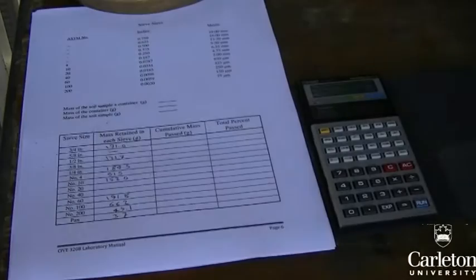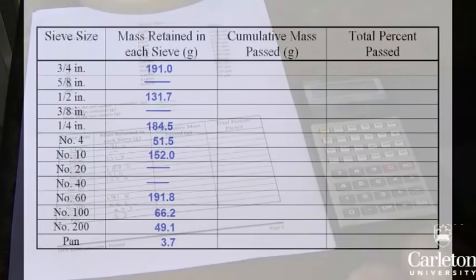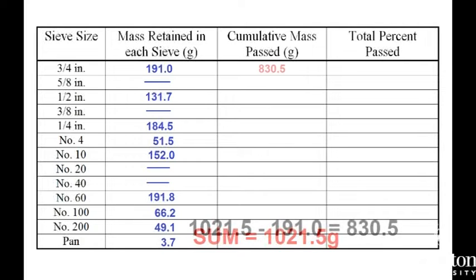Using a table like this one, calculate the percentage of soil passing each sieve. First, add the total mass of material passing all sieves and record it. Next, calculate the cumulative mass passing each sieve. Starting from the top and working downward, the cumulative mass passed at each sieve is the mass passed by the next largest sieve minus the mass retained by that sieve.